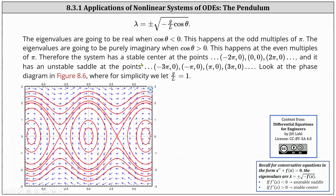Therefore, the system has stable centers at the points negative two pi comma zero, zero comma zero, two pi comma zero, and so on, where theta is an even multiple of pi. It has unstable saddle points at negative three pi comma zero, negative pi comma zero, pi comma zero, three pi comma zero, and so on, meaning when theta is an odd multiple of pi.